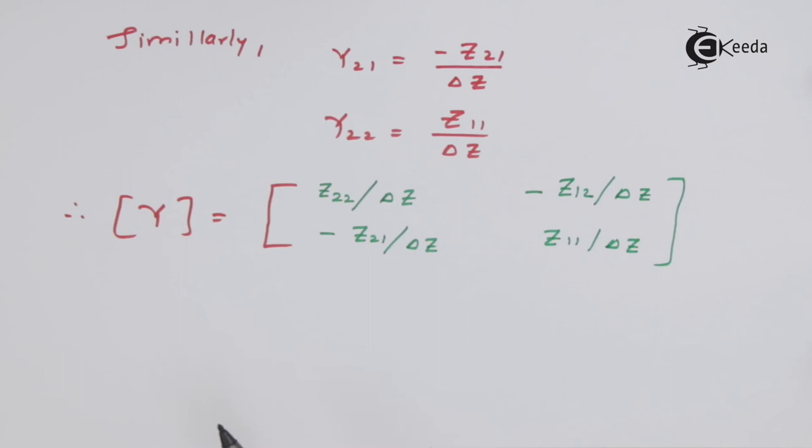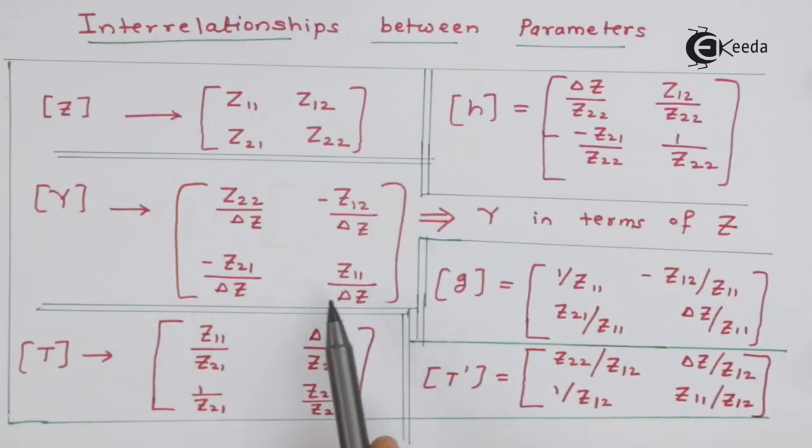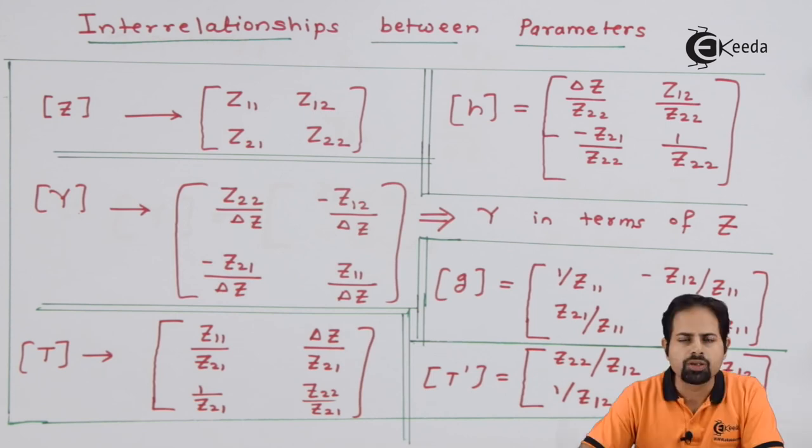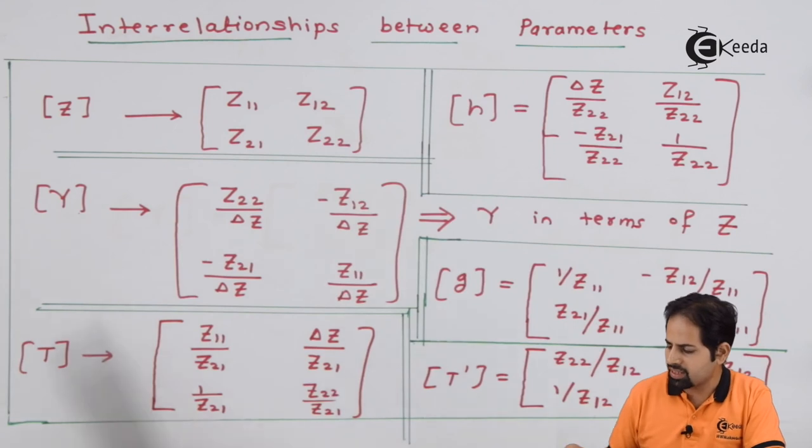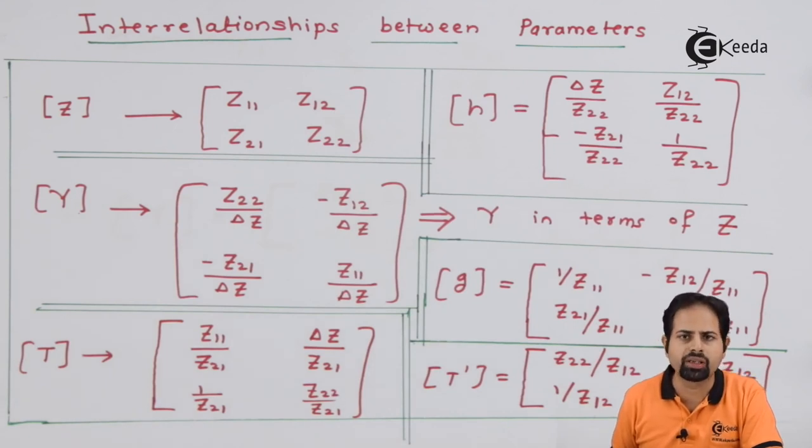And even the remaining two terms, they are also same. So this proves that interconnections between the parameters can be derived. We will not derive all the equations, but we will remember these basic equations because they will be required to solve the numericals. So this is all about this topic.